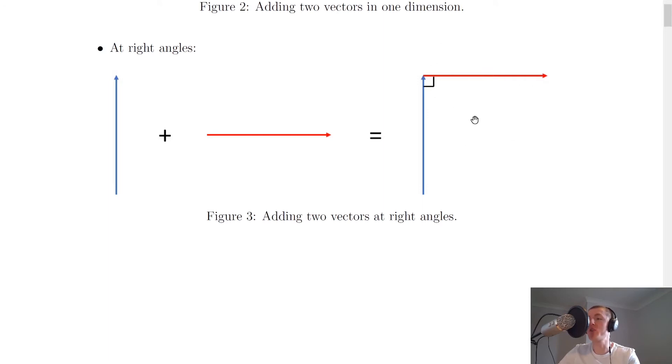Now this isn't the only way that I could add the two vectors nose to tail. I could also have added the nose of this one to the tail of this one. So it would have looked like this instead, along and then up.